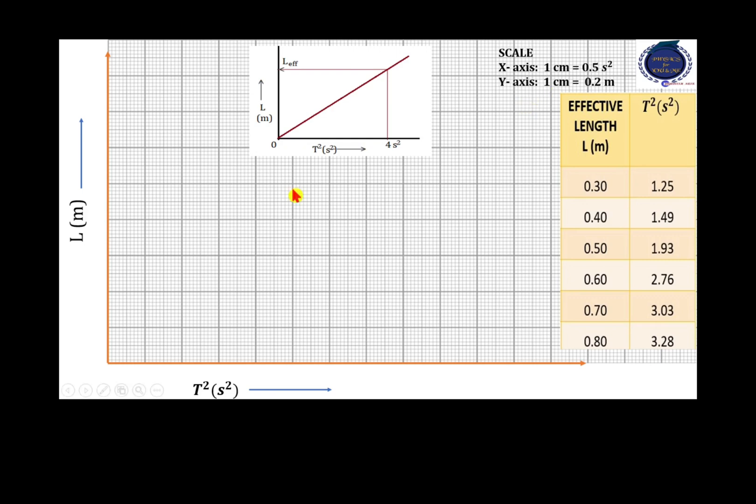Now, let us write the values along x and y-axis. Since 1 cm is equal to 0.5 seconds square along the x-axis, here, the 2 cm will be marked as 1, 2, 3, and 4, which is the maximum value which should be obtained here.